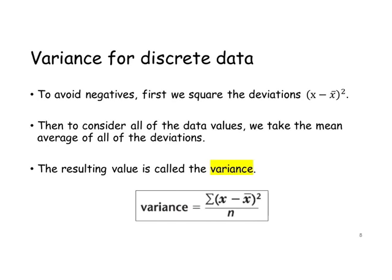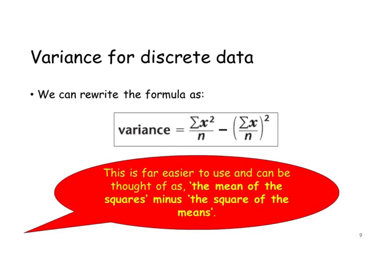The resulting value is called the variance, and the variance equals the sum of x minus x-bar all squared, divided by n. We can rewrite this formula as variance equals the sum of x-squared divided by n, minus the sum of x divided by n, all squared. This formula is far easier to use and can be thought of as the mean of the squares minus the square of the mean.